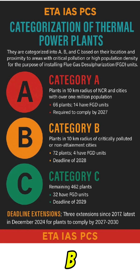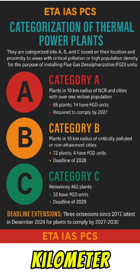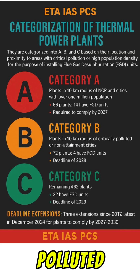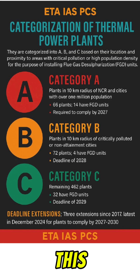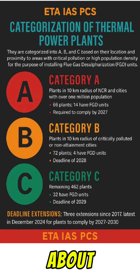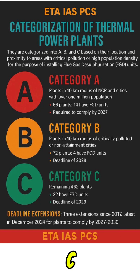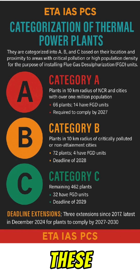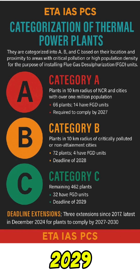Category B includes plants within a 10 km radius of critically polluted cities. This includes 72 plants, of which 4 have FGD units, with a deadline of 2028. Category C includes the remaining 462 plants, of which 32 have FGD units, with a completion deadline of 2029.